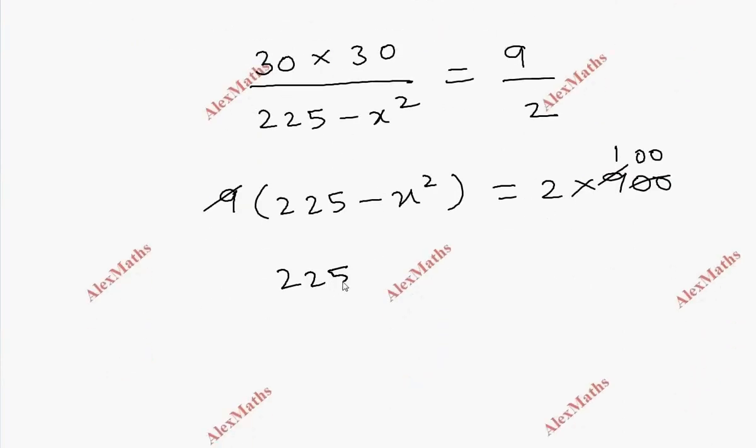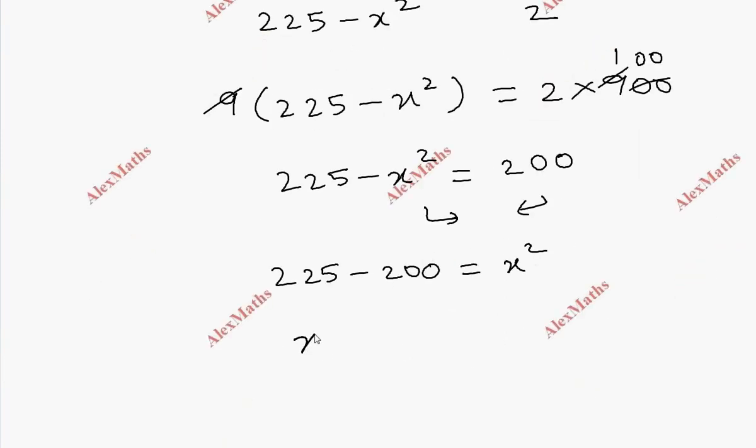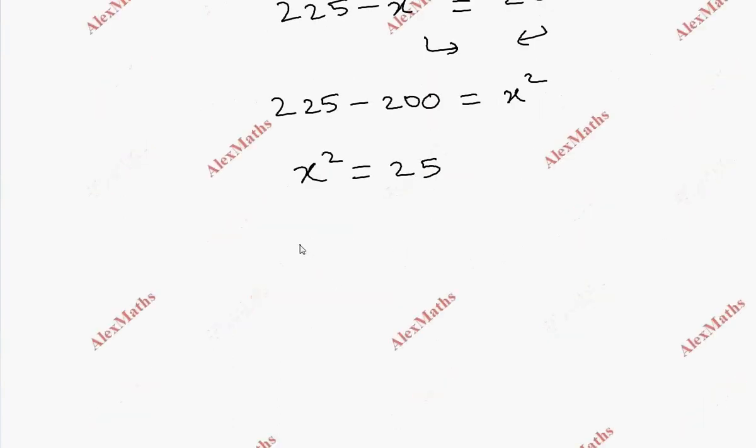So 225 minus x square is equal to 200, so 225 minus 200, x square equal to 25. X square is equal to 25, so x is equal to plus 5 or x is equal to minus 5.